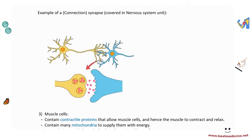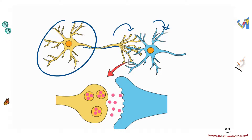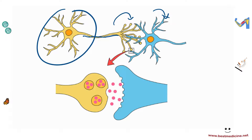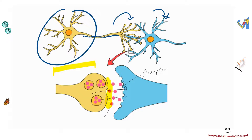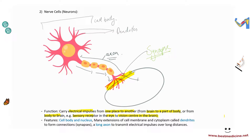Where an axon connects to another cell — whether a neuron or a non-neuron — that connection is called a synapse. Information is transmitted across a synapse using chemical messengers: the terminal end of the axon releases chemicals that bind to receptors on the adjacent cell. That's how information is transmitted. For AQA, you need to know what a neuron is, what it's made of, and its general function.